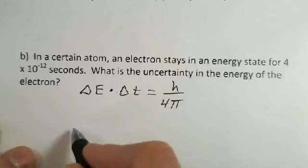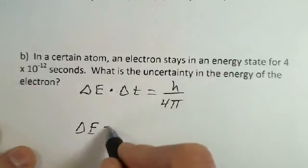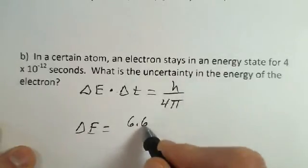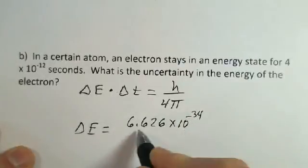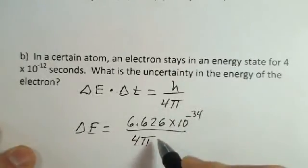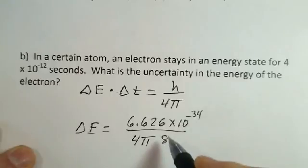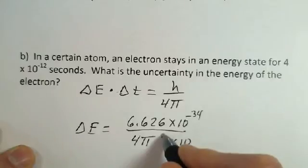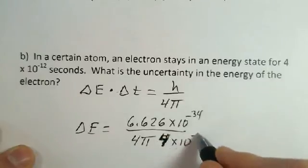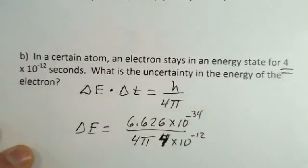So we've got all the information we need. So 6.626 times 10 to the minus 34, 4 pi. And the uncertainty in the time, the length of time, we should say. And it's 4, or I was thinking of 8, 4 times 10 to the minus 12 seconds is what I need to bring in here as a factor.